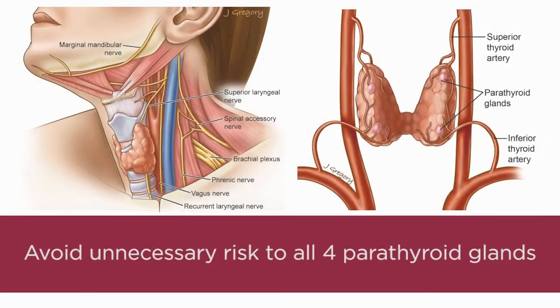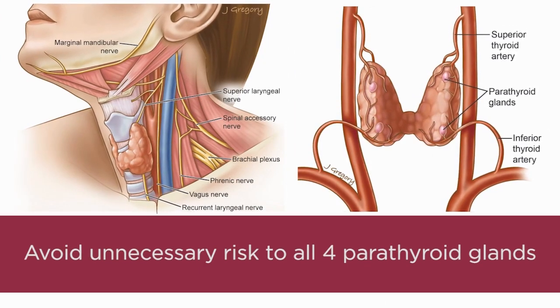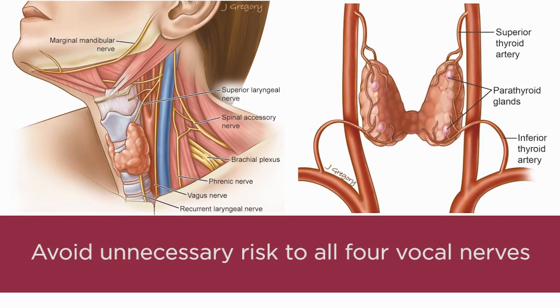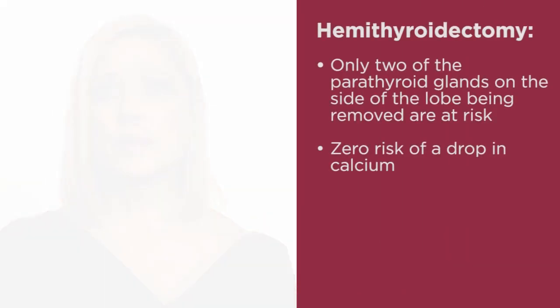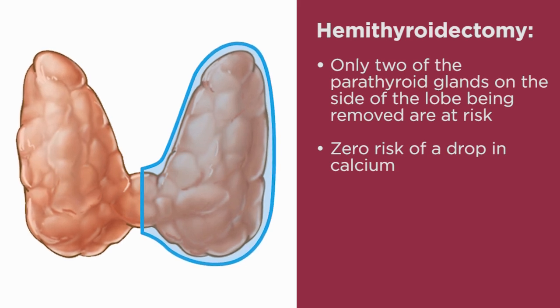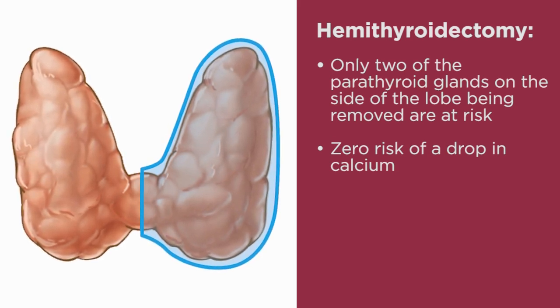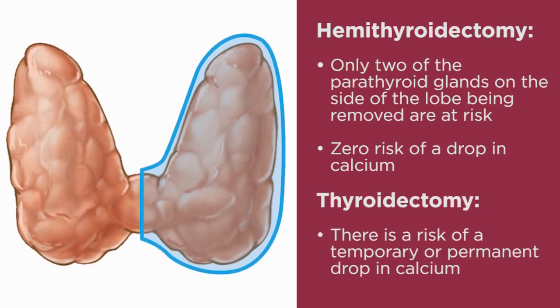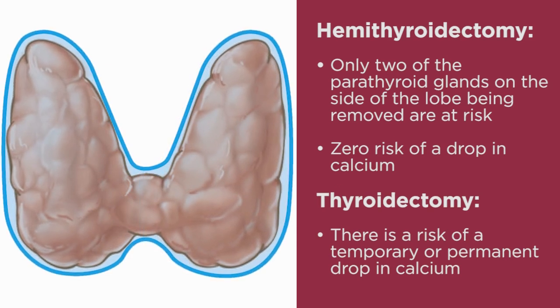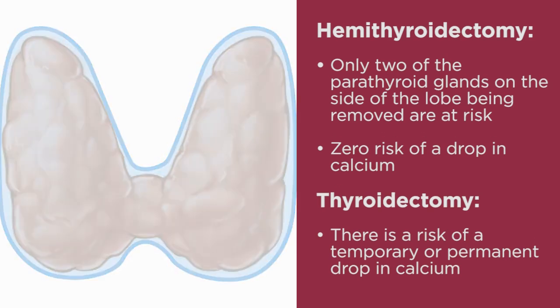Surgeons typically prefer not to remove the opposite lobe to avoid unnecessary risk to all four parathyroid glands as well as the risk to all four nerves that control the vocal cords. Although the procedure is very safe, there is a significant difference between a hemithyroidectomy and a total thyroidectomy with respect to the potential for hypoparathyroidism. In a hemithyroidectomy, only two parathyroid glands on the side of the lobe being removed are at risk, resulting in zero risk of a drop in calcium. Following a total thyroidectomy, there is a risk of a temporary or permanent drop in calcium. A drop in calcium lasting more than six to twelve months may mean you will have to take calcium and vitamin D every day for life.